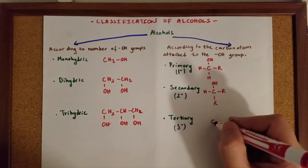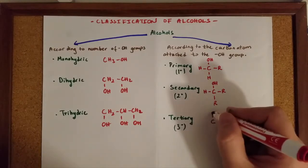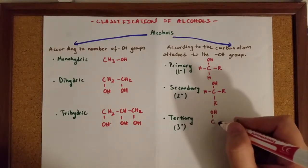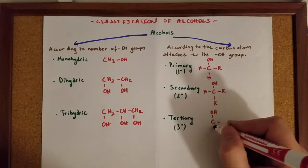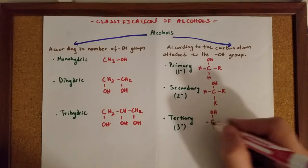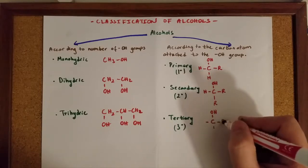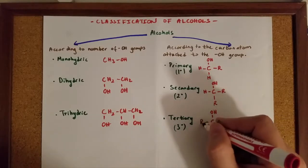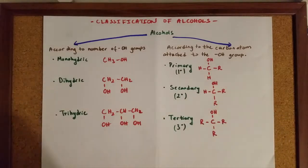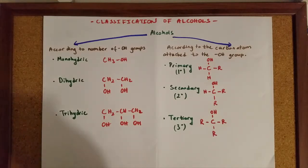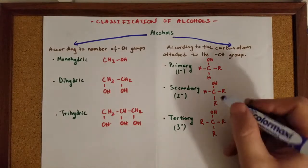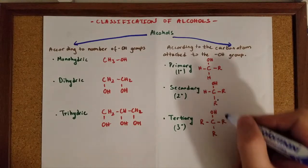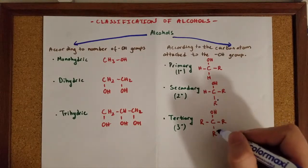In the tertiary alcohols, the carbon atom which is attached to the OH group is connected to three radicals. By the way, these radicals might be the same radicals, but they might be different ones as well.